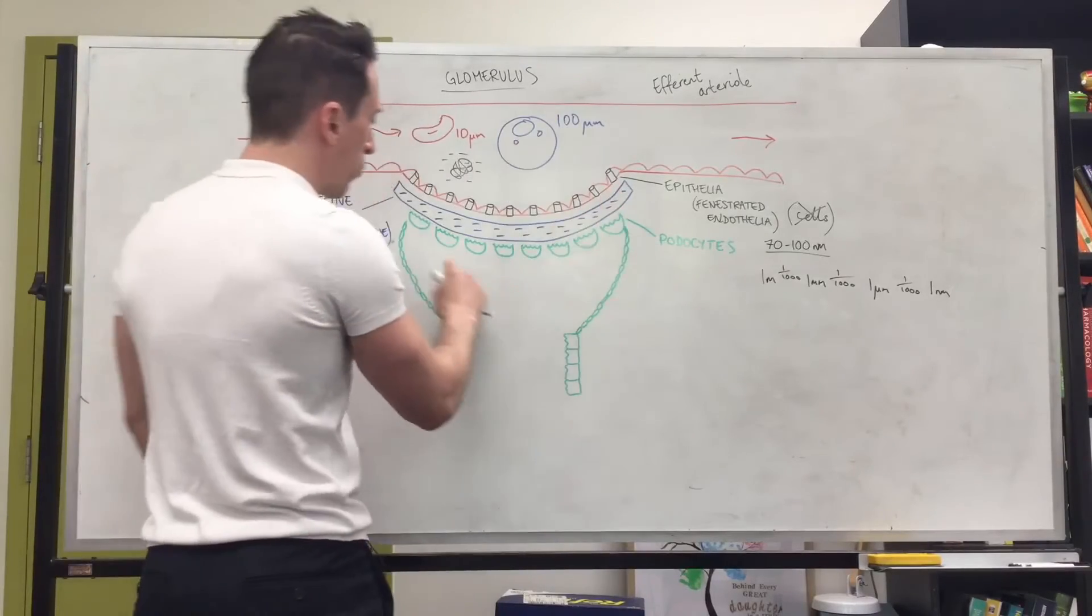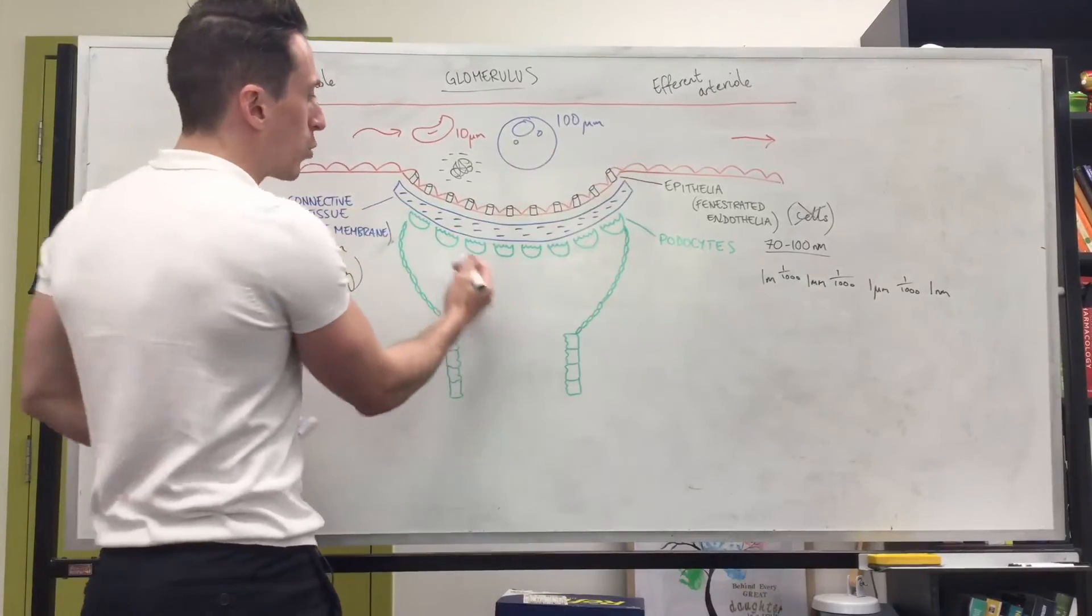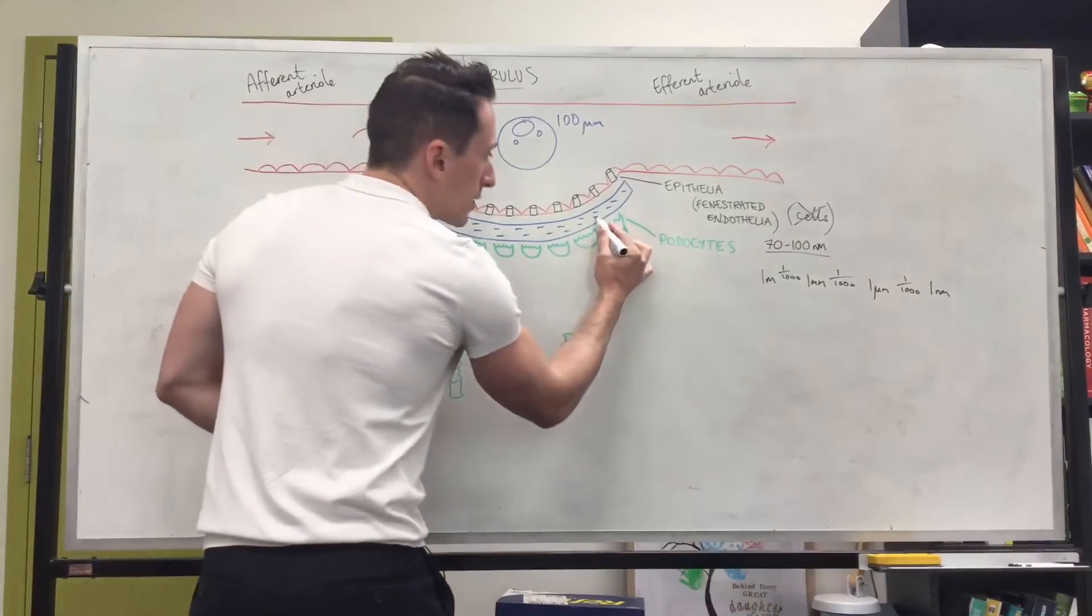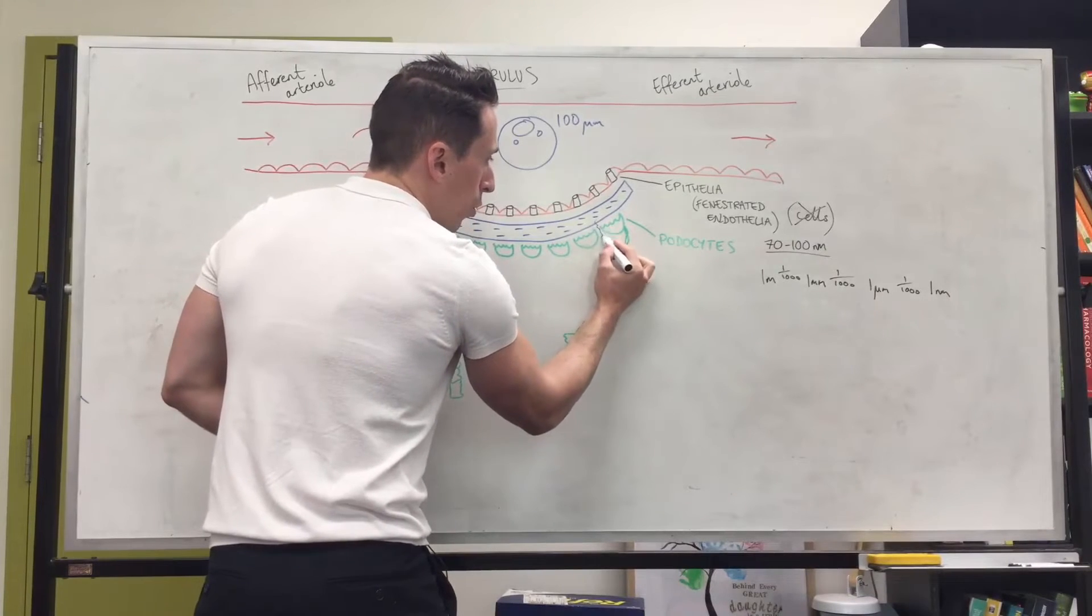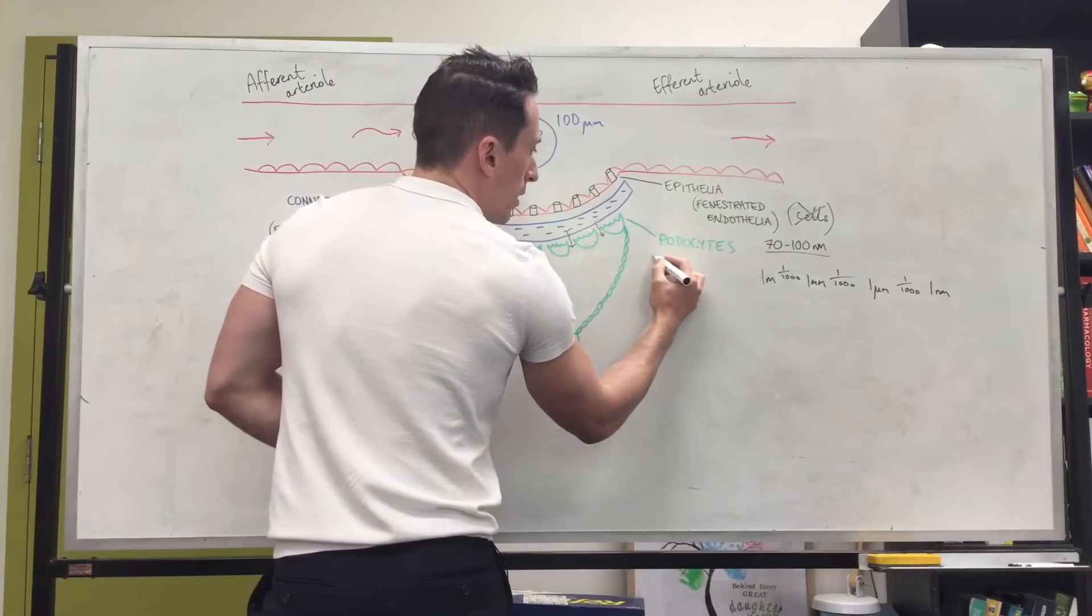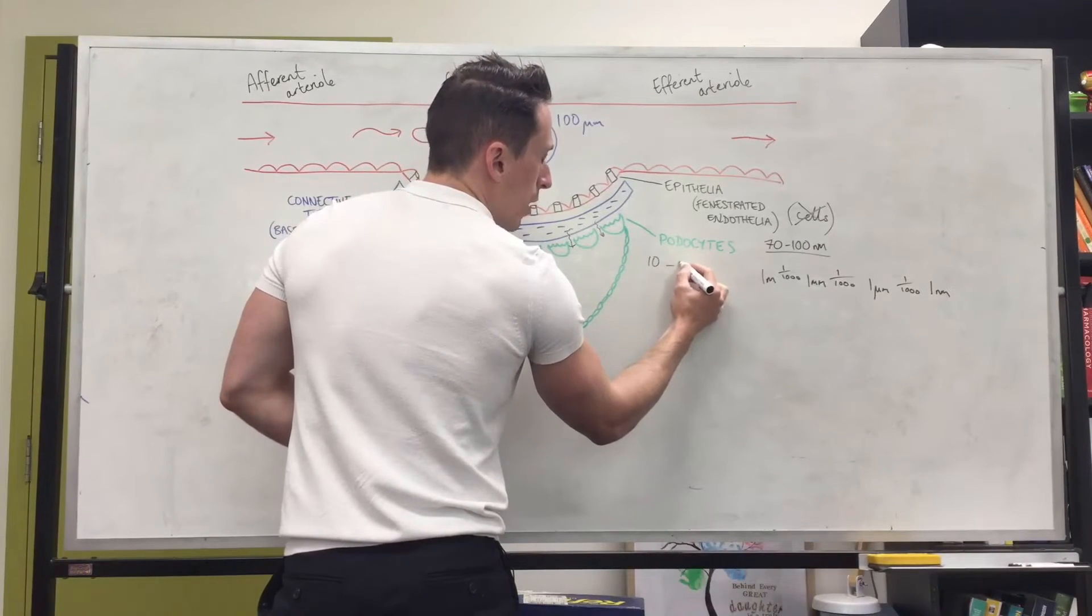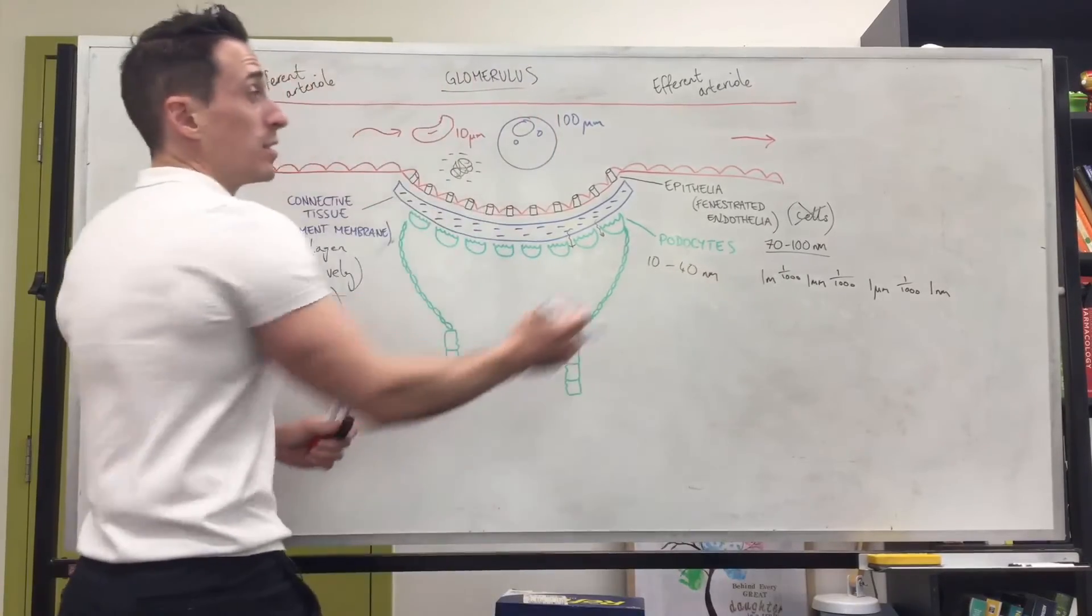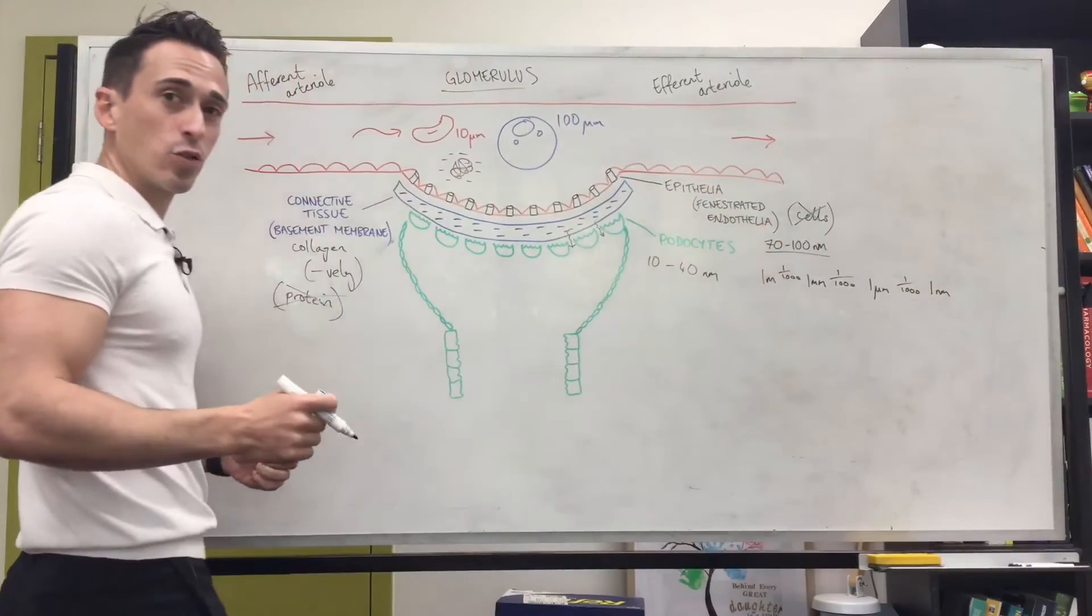Now the third membrane, these little things that look like they've got extensions, they're called podocytes. I've written that up here. And their diameter, they can let some things through. What's their diameter that they're letting through? It's between, it's around about between 10 to 40 nanometers, which is even smaller than that of the fenestrated endothelia.